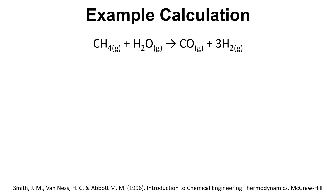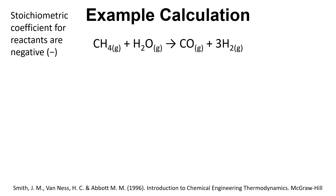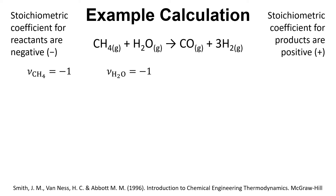Let's look at an example. We have CH₄ reacting with H₂O to form CO and 3H₂ — this is steam reforming of methane. The stoichiometric coefficients for reactants are negative, so methane is minus one and water is minus one. The stoichiometric coefficients for products are positive, so carbon monoxide is positive one and hydrogen is positive three.